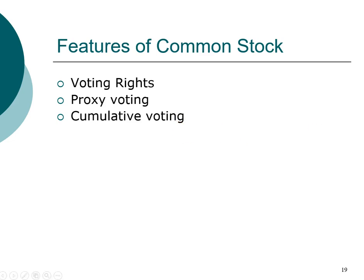In addition to cumulative voting, companies sometimes can also have different classes of stocks. This is particularly popular among new technology firms such as Facebook, Google, and Snapchat.